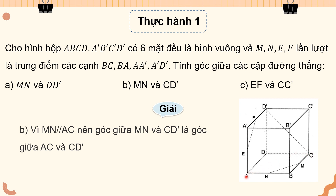DC' là đường chéo của hình vuông DCC'D'. AC cũng là đường chéo của hình vuông ABCD. DA cũng là đường chéo của hình vuông ADD'A'. Hình có 6 mặt đều là hình vuông nên 3 đường chéo này bằng nhau, tam giác ACD' là tam giác đều. Góc tạo bởi AC với CD', chính là góc D'CA, bằng 60 độ.